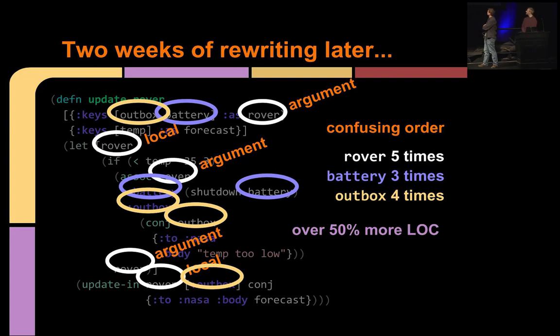All of that is confusing because it's hard to keep track of which rover I'm talking about, the old rover or the new rover. That's kind of a pain. Also, I had to say it five times. Also, I had to say battery three times. I had to destructure it, refer to it as a keyword, and use it three times instead of once. And then I had to say the same thing for outbox four times.